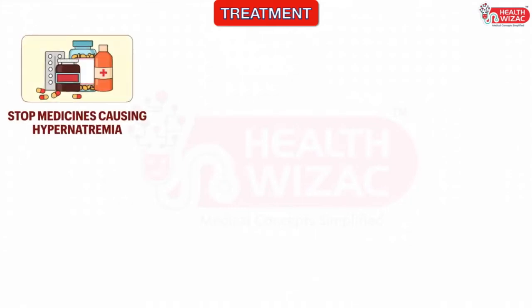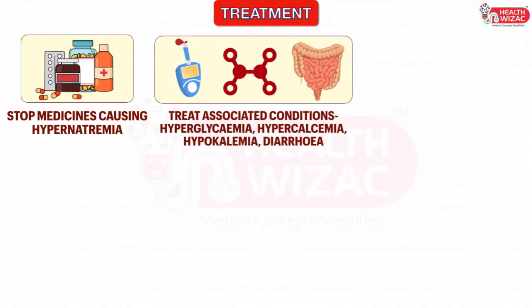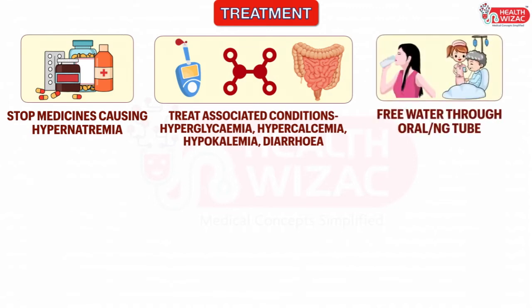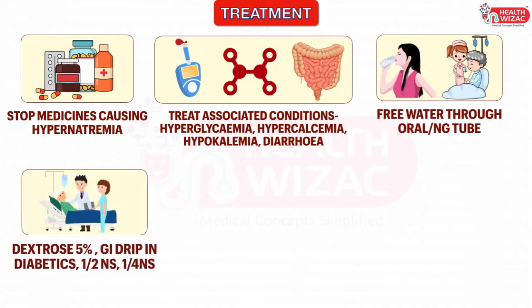Treatment of hypernatremia depends upon the underlying cause. Drugs causing hypernatremia should be stopped or modified. Clinical conditions like hyperglycemia, hypercalcemia, hypokalemia, and diarrhea should be treated at the earliest. Free water deficit should be calculated and water administered either orally or via nasogastric tube. Dextrose-containing IV solutions like dextrose 5% should be started at the earliest. In diabetic patients with high sugars, dextrose solutions should be mixed with human actrapid insulin to avoid acute rise in sugars. Hypotonic saline should be used in place of normal saline.